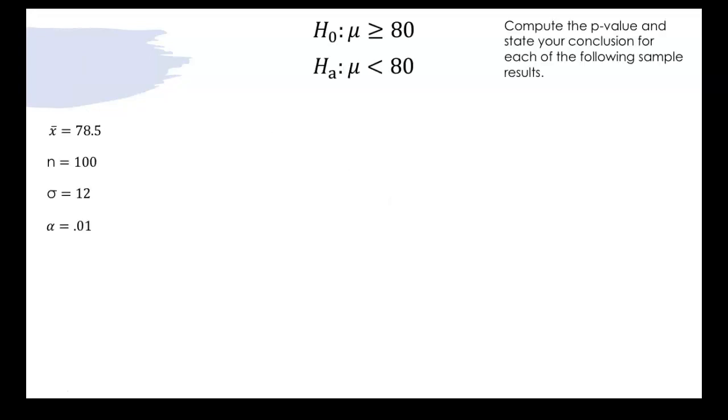So let's work with x-bar being 78.5 first. So if we need to compute a p-value the first step that we need to do is find a z-score.